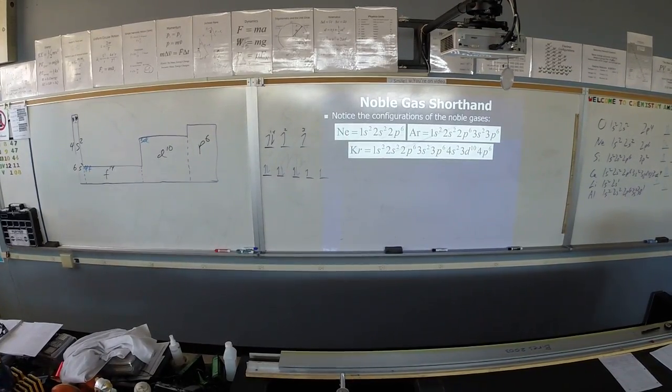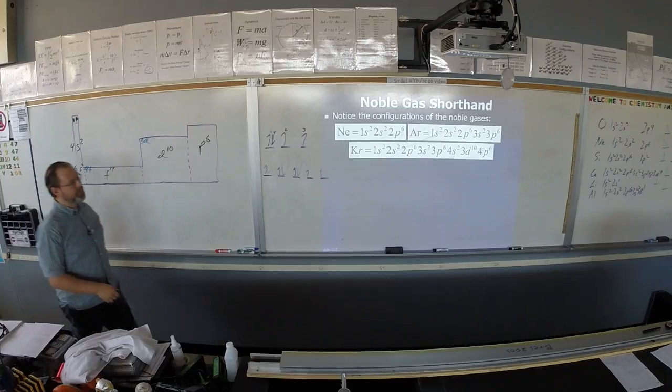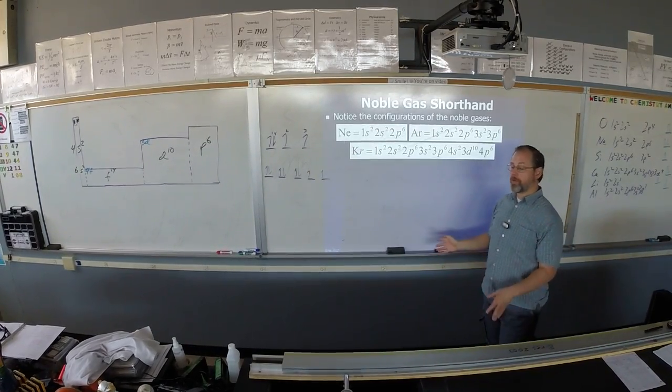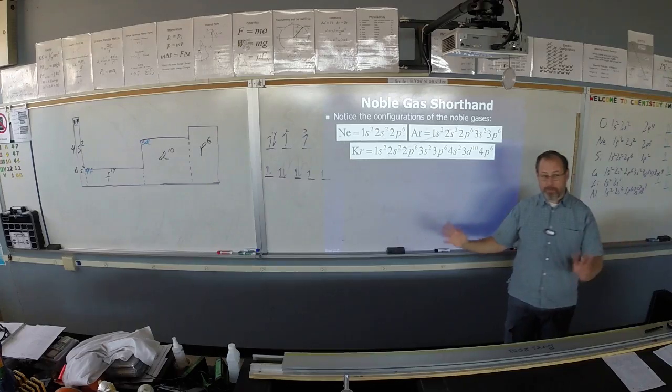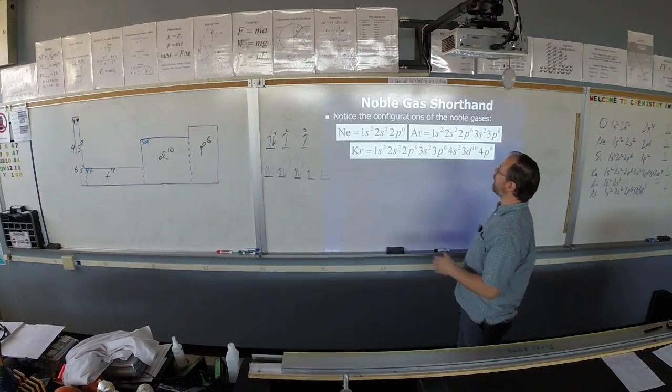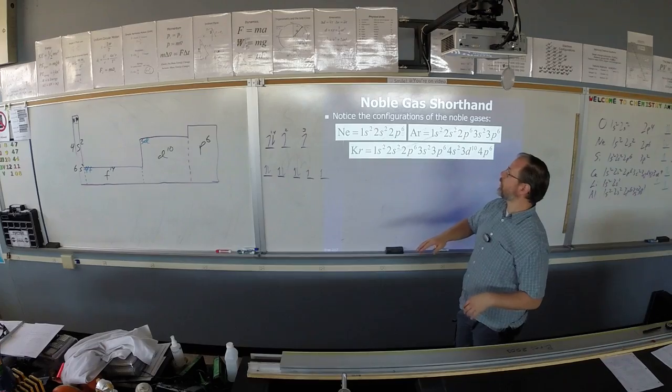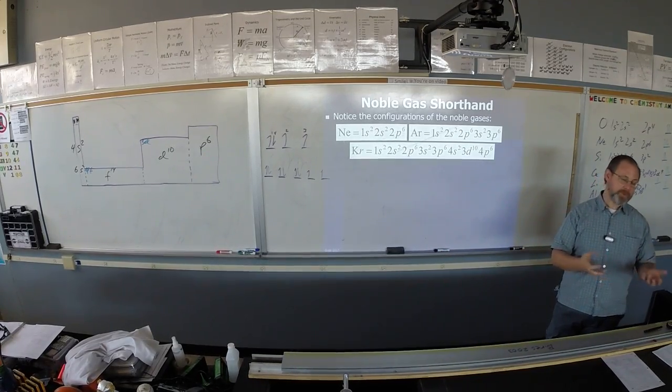So anyway, alright. To keep you from having to write the full electron configuration for every big giant atom, we have something called a noble gas shorthand. Noble gas shorthand is basically a shortcut.